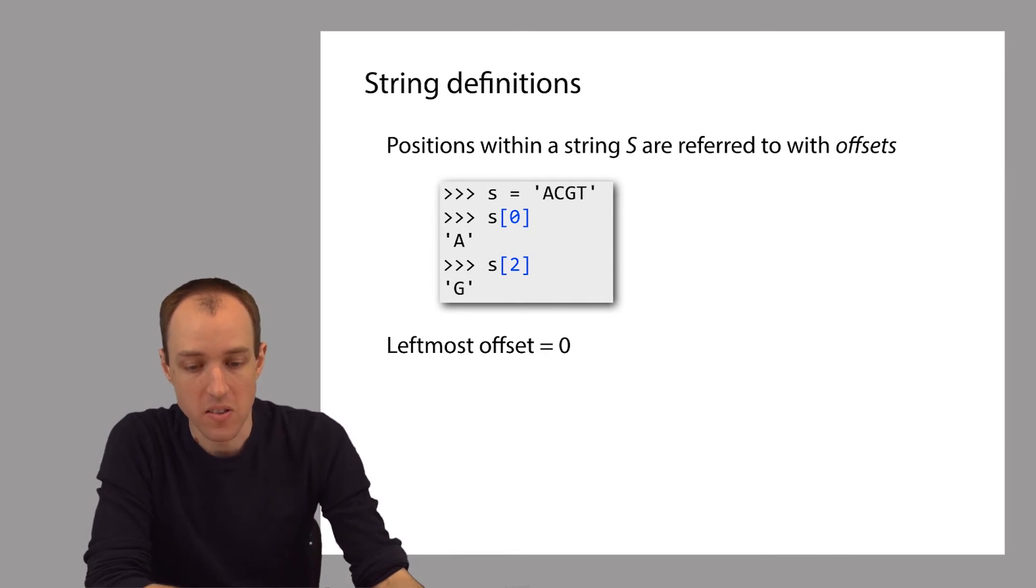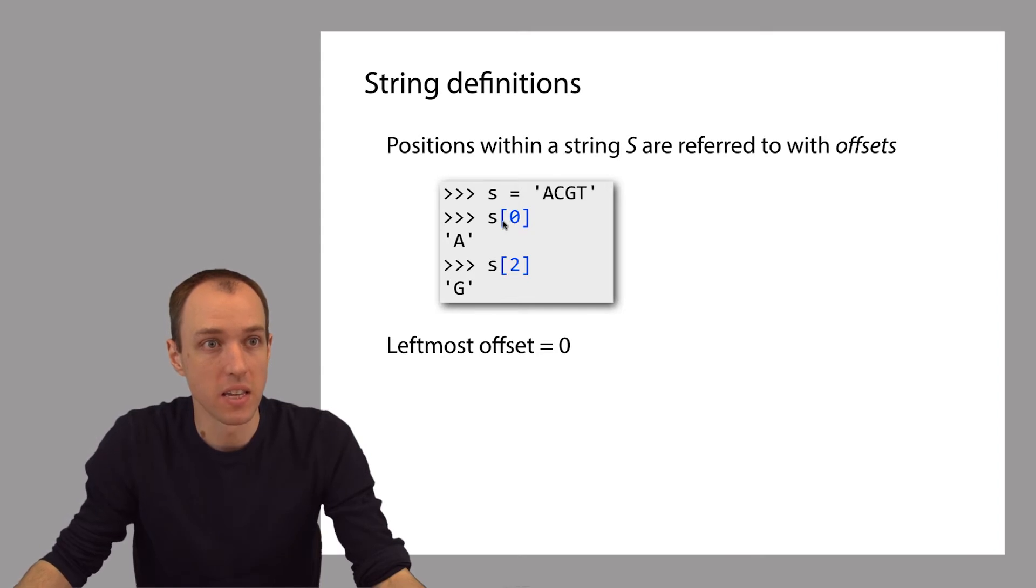In this example, we're getting the character at offset 0 within the string S. That character is A. And here we're getting the character at offset 2, which is 0, 1, 2, which is G, as you can see here.